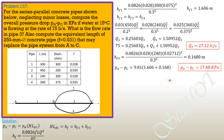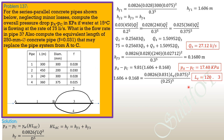For the equivalent length, head loss and discharge are retained. Setting 1.606 + 0.168 equal to 0.0826 times equivalent friction factor 0.031 times L_eq times (0.075)² over (0.25)⁵, we solve for L_eq equals 120.3 meters.